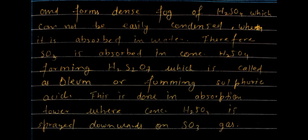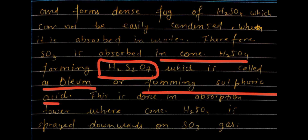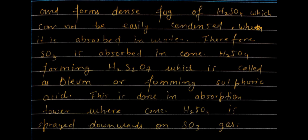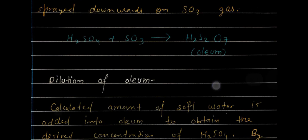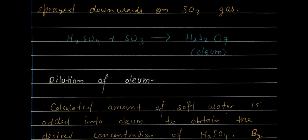SO₃ absorbed into concentrated H₂SO₄ forms H₂S₂O₇, known as oleum or fuming sulfuric acid. The reaction is: H₂SO₄ + SO₃ → H₂S₂O₇. This is carried out in the absorption tower where concentrated H₂SO₄ is sprayed downward onto the SO₃ gas.